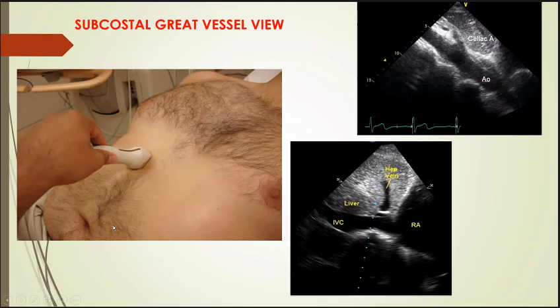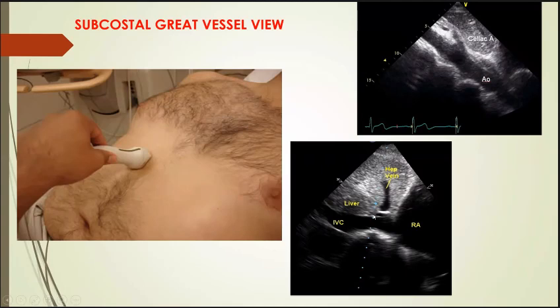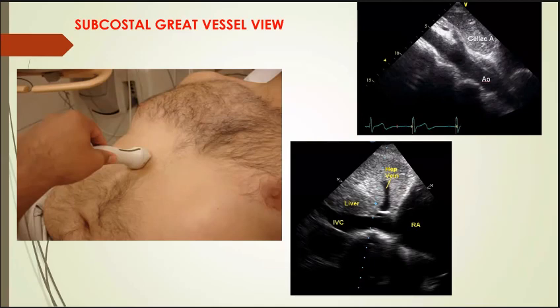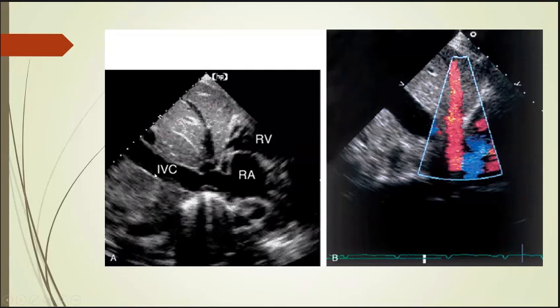The patient lies in the supine position with the probe in the subcostal region and the pointer pointing towards the neck. In this view, mainly we see the IVC — which opens into the right atrium. We can also see the hepatic veins opening into the IVC. This is the IVC, these are the hepatic veins opening into the IVC, and this is the right atrium. How to evaluate IVC for volume status will be covered in detail in coming classes.